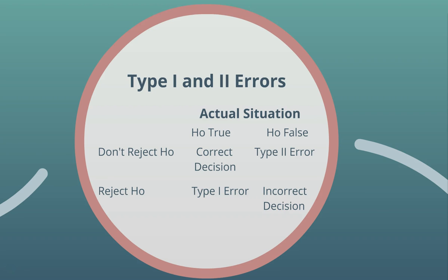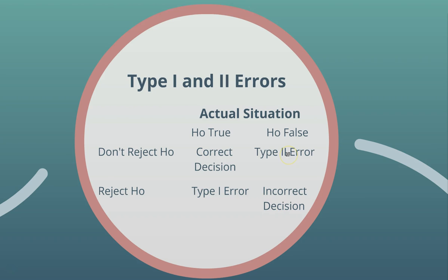What do Type 1 and Type 2 errors say? Here, one axis represents the actual situation and the other represents our decision based on testing. If the actual situation is that H₀ is true and we do not reject H₀, we are making a correct decision. However, if we do not reject H₀ when it is actually false, we are making a Type 2 error.